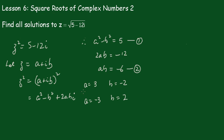And remember, we'll only have two solutions. So, the solutions are that z is equal to 3 minus 2i, and z equals minus 3 plus 2i.